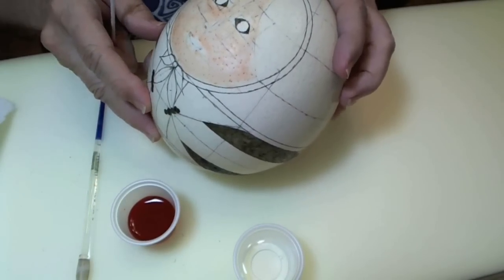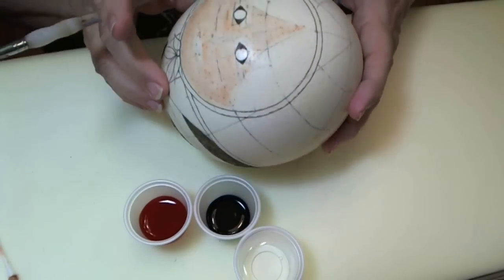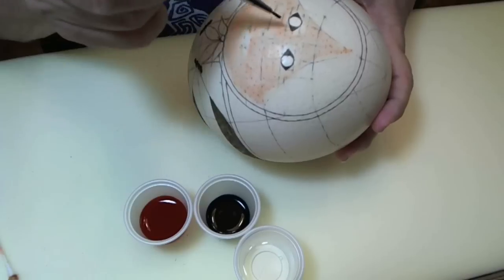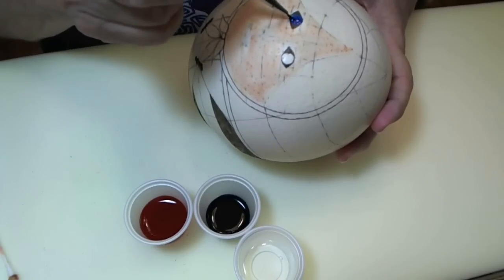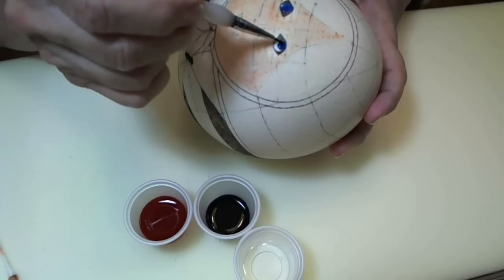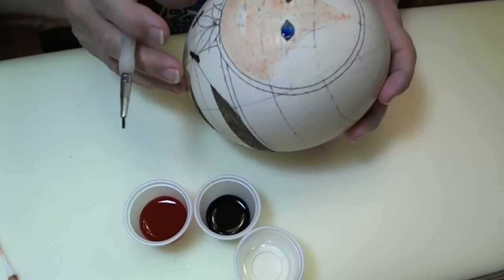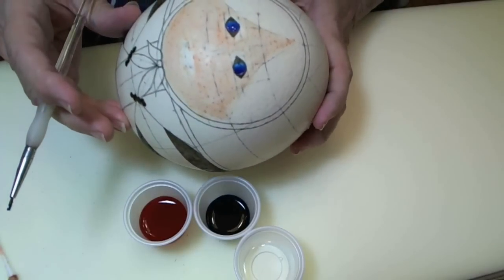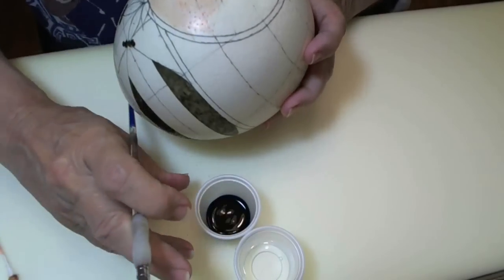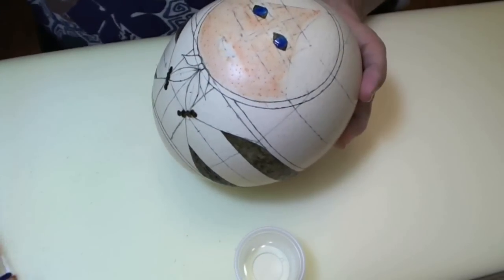What we would do next is take a blue or green or brown, depending on what color eye shape we want. And we just fill in the eye area. I like to let it just sit and well up and dry so it's a nice dark color.